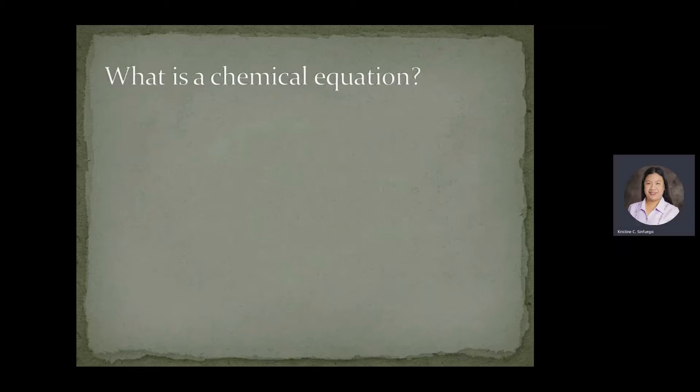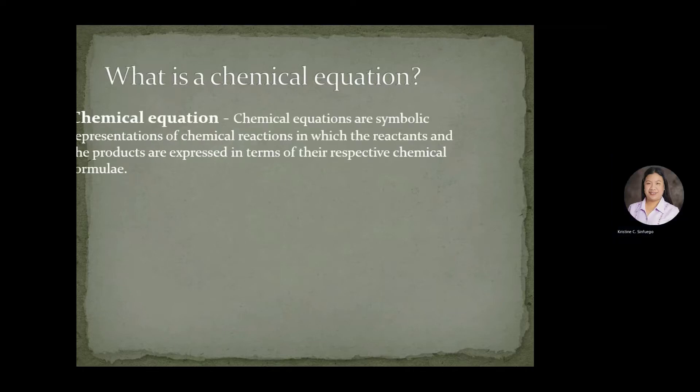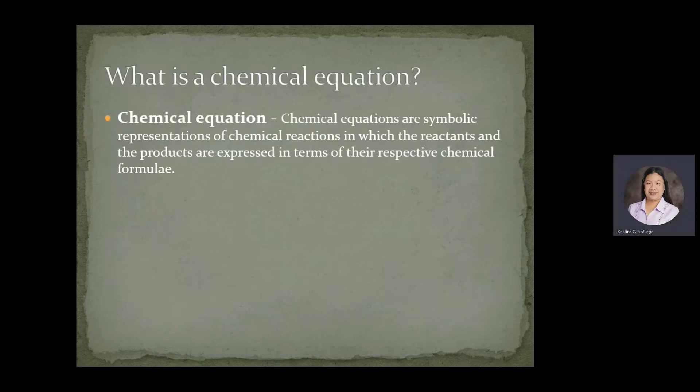So what is a chemical equation? A chemical equation is a symbolic representation of a chemical reaction in which the reactants and the products are expressed in terms of their respective chemical formulas.